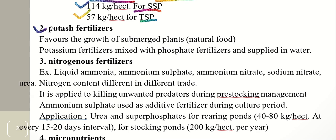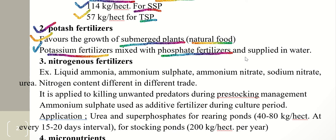Potassium is an essential nutrient element for plants. When a new pond is built or when it is without mud, the addition of potash fertilizers becomes very important. This favors the growth of submerged plants as natural food. Potassium fertilizers are mixed with phosphate fertilizers and supplied in water as potash fertilizers.